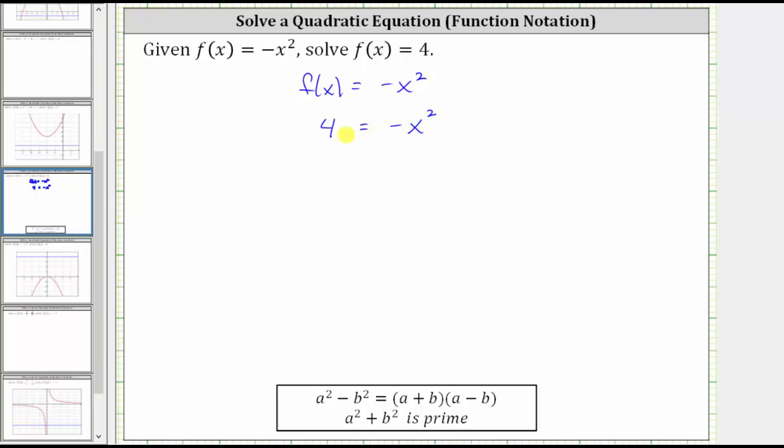And now let's try to solve this equation by factoring. The first step is to set the equation equal to zero. To do this, we can either subtract four on both sides or add x squared to both sides. Because we prefer to have the leading term positive, let's add x squared to both sides of the equation.